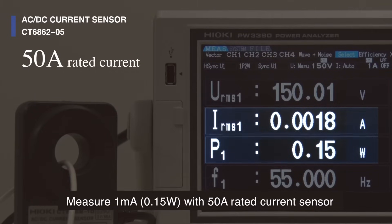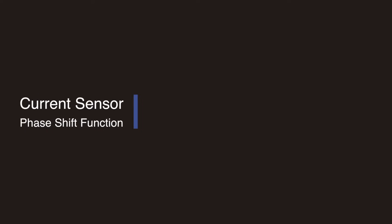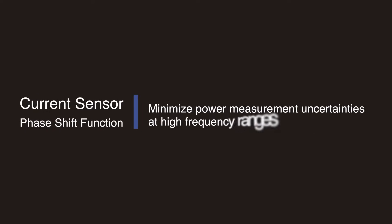As you can see, even under these precise conditions, we were able to accurately measure 0.15 watts of power. This superior precision is achieved with the PW3390's current sensor phase shift function that minimizes power measurement uncertainty at high frequency ranges.